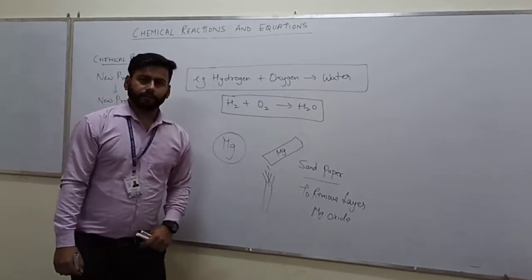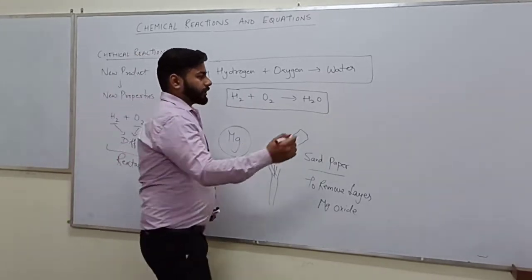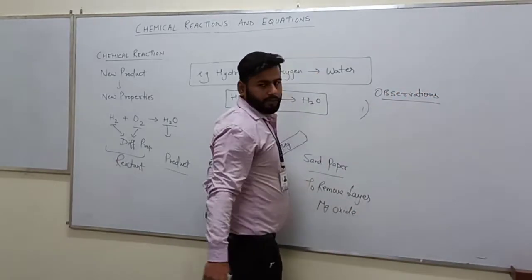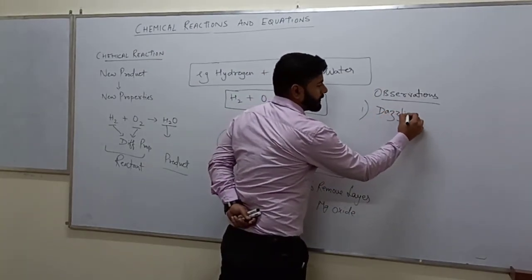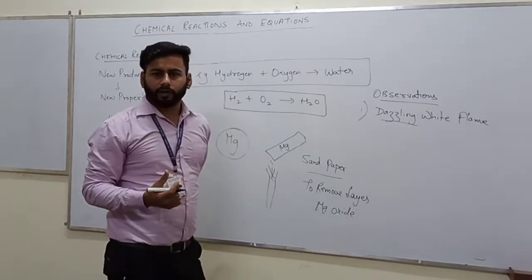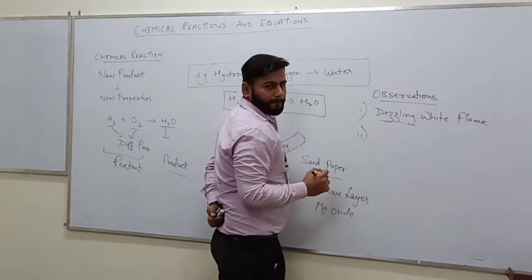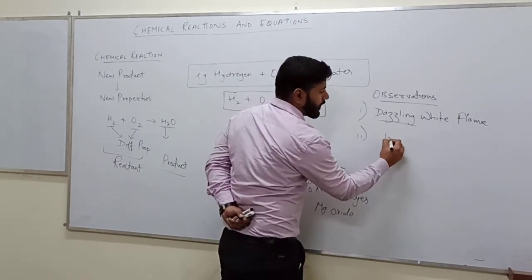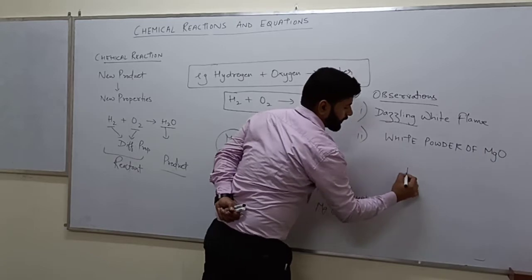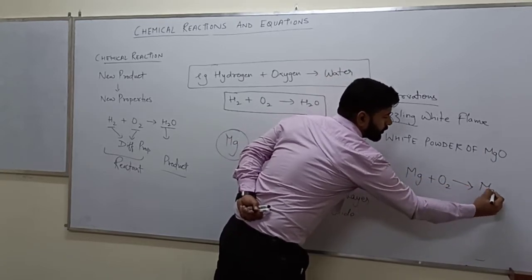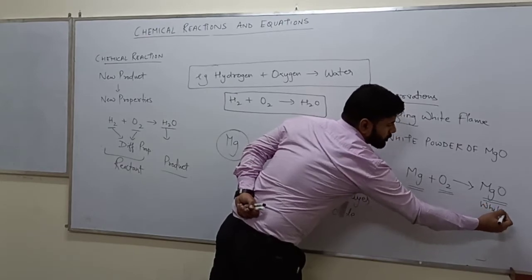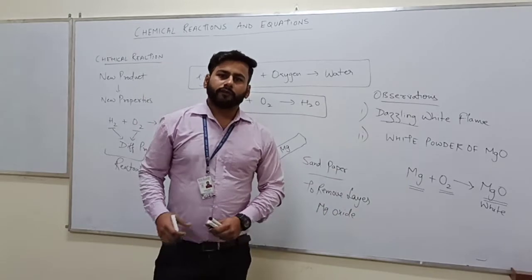Now, after removing the layer, if we will burn this magnesium ribbon, two observations will be there. The first observation will be a dazzling white flame will be produced. Dazzling means a very, very bright flame will be produced. The second observation will be on complete burning of magnesium, you will observe that a white powder of magnesium oxide will be formed. This is the basic reaction: Mg plus O2 will give MgO. Because magnesium has combined with the oxygen present in the air and formed this white powder known as magnesium oxide.